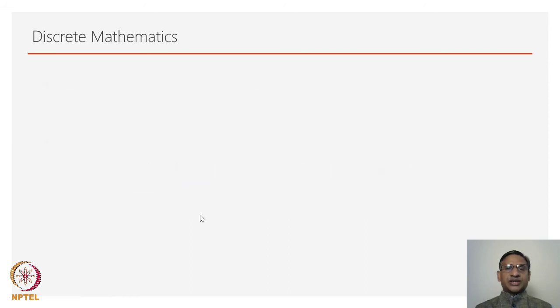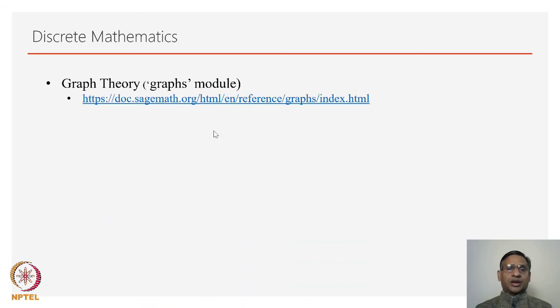Discrete mathematics is another branch which is very useful and has a lot of applications. For example, SageMath has a module called graphs, and using that you can explore most of the concepts in graph theory. In case you are interested in learning graph theory, Sage can be used as a tool. For example, we used this module to generate a random network when we were looking at Google search page rank algorithm.